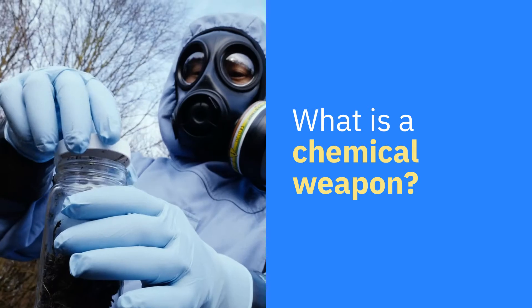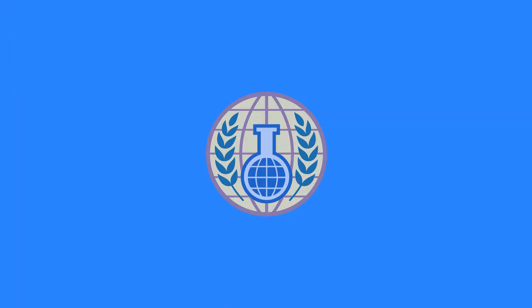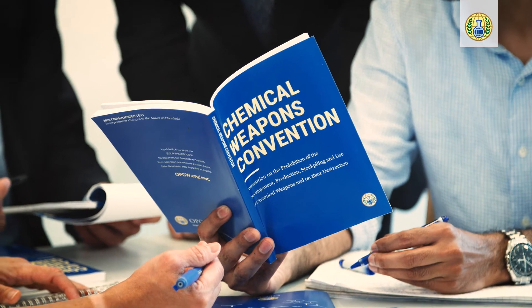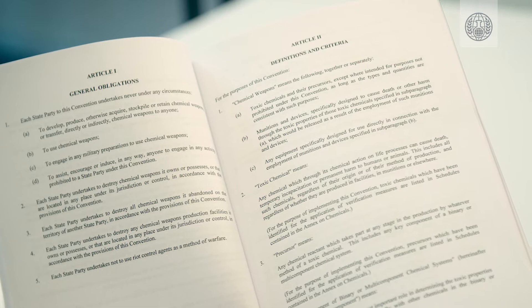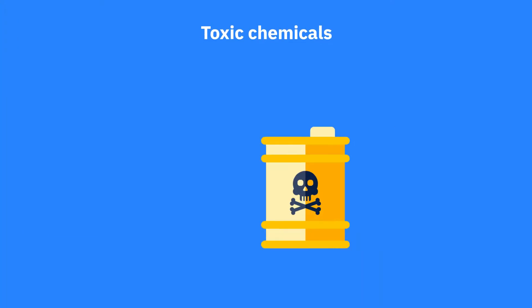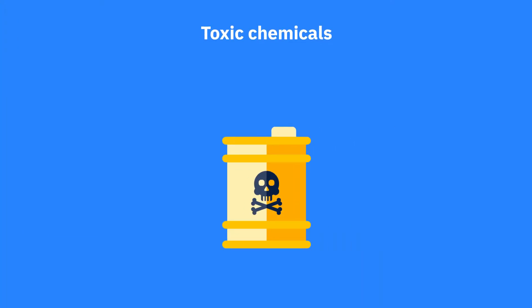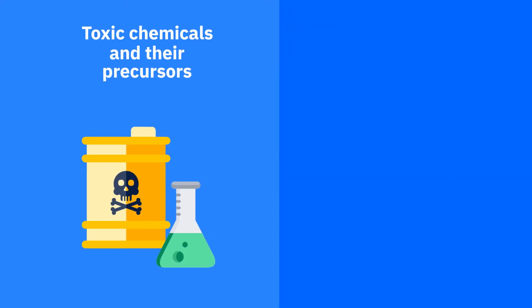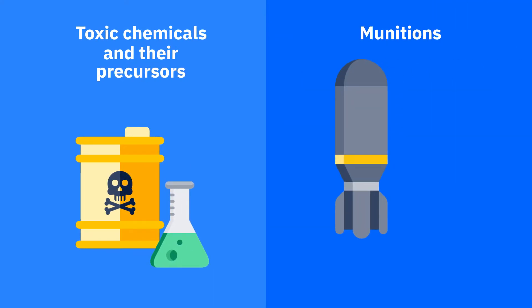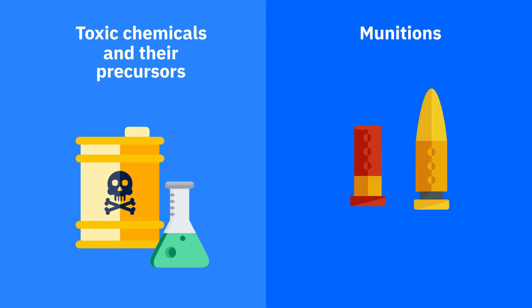What is a chemical weapon? According to the Chemical Weapons Convention, a chemical weapon is any toxic chemical that can cause death or harm to humans or animals through its chemical action on life processes, any chemical precursor used to produce a toxic chemical, or any munitions or devices designed to inflict harm or cause death through the release of toxic chemicals.